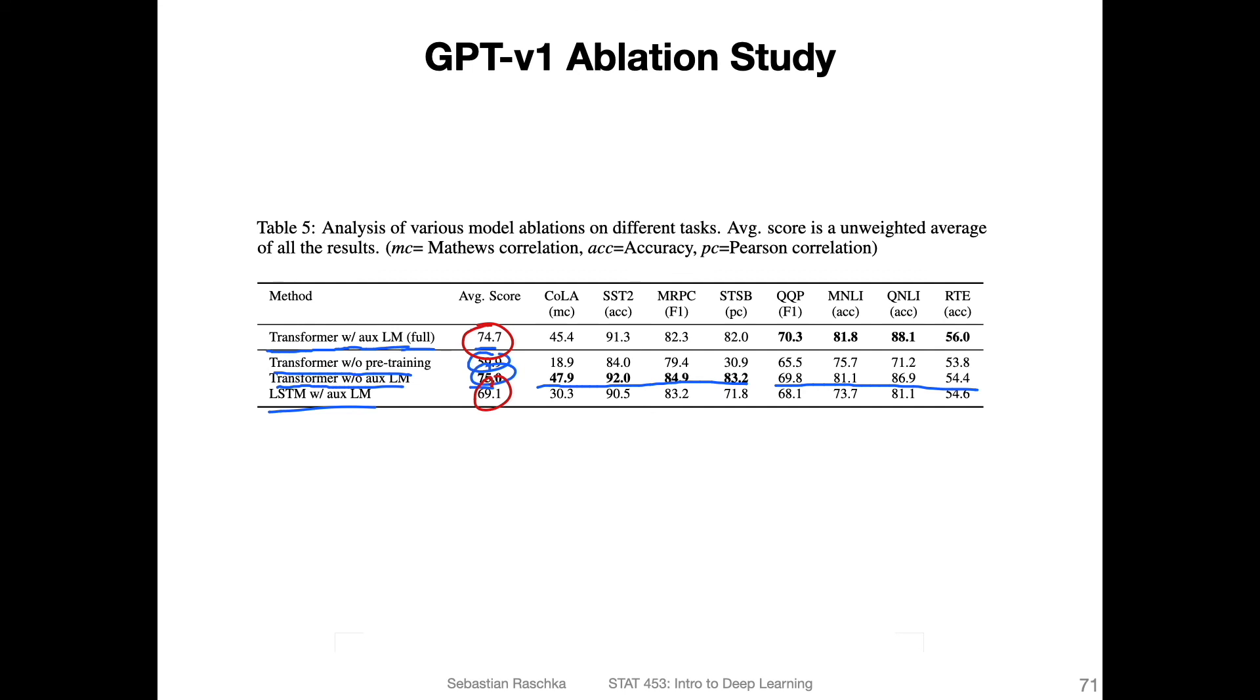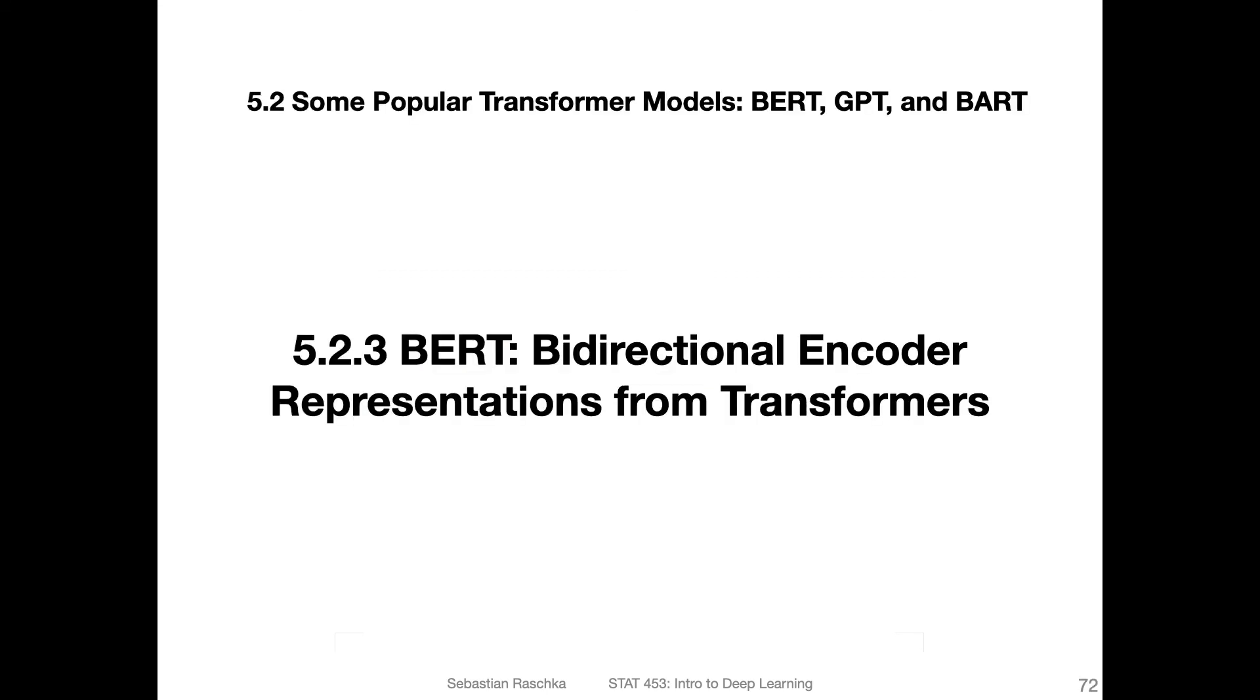Okay, so this is GPT version one. By today's standards, this is already a very old model because there's already GPT version two and three. But it's a good model to start with. In the next video, before we cover the other GPT models, let's discuss the BERT model, which has a slightly different approach to using a transformer. I'm covering this one before covering the other GPT versions because in the BERT paper they specifically compare their model to GPT-1. So it's the chronological order: we have GPT version one, BERT, GPT version two and three. Okay, so next video will be on the BERT model.